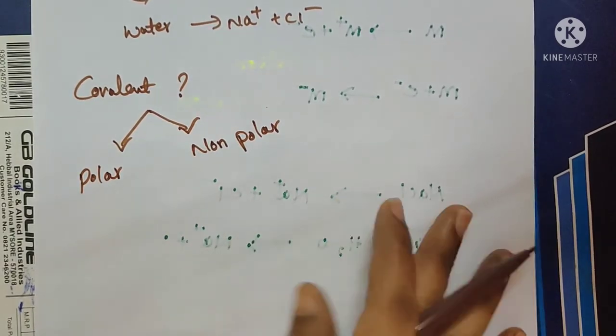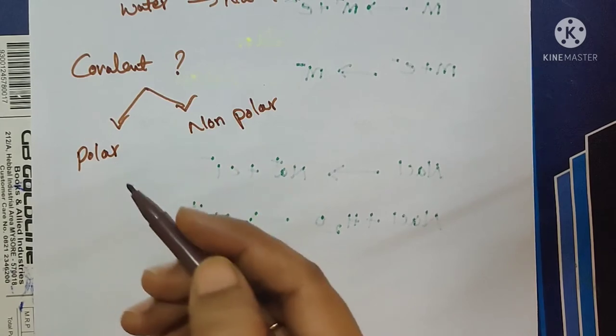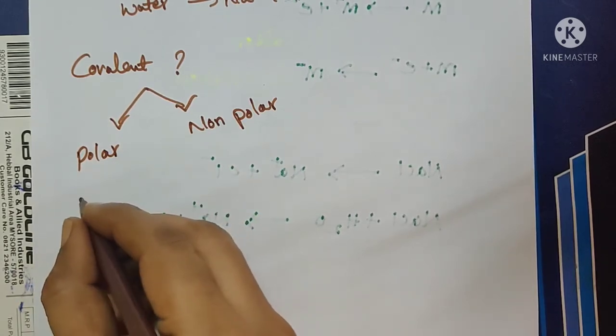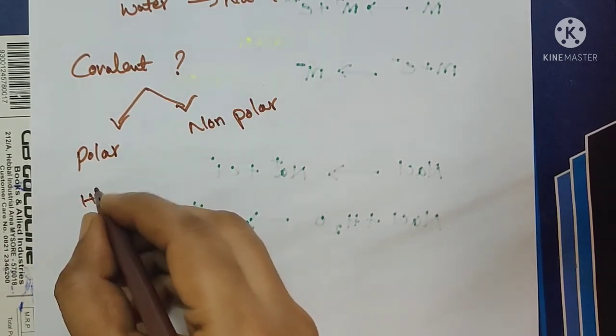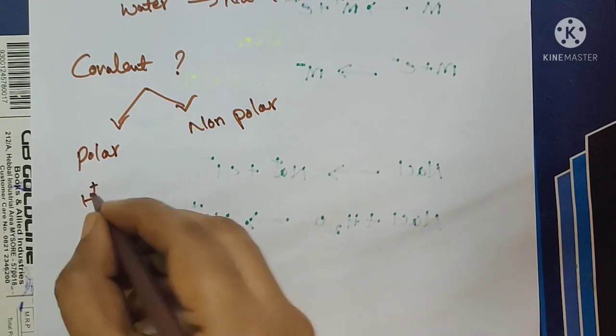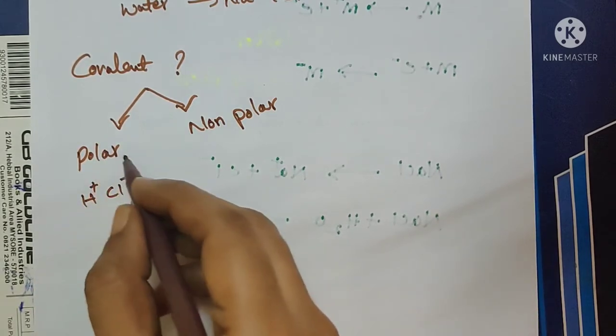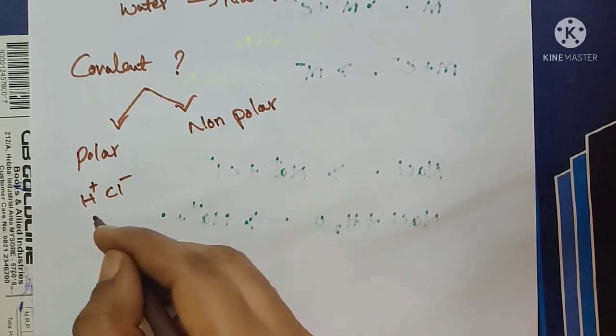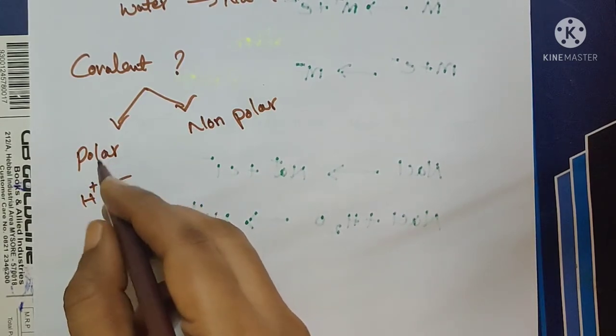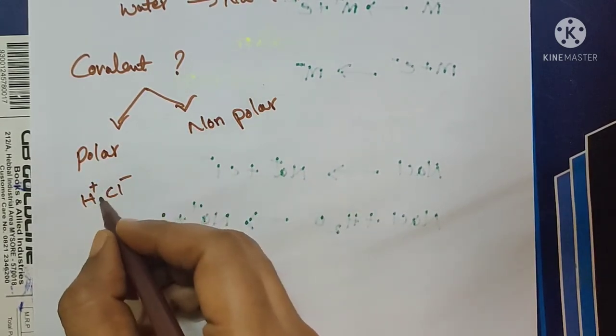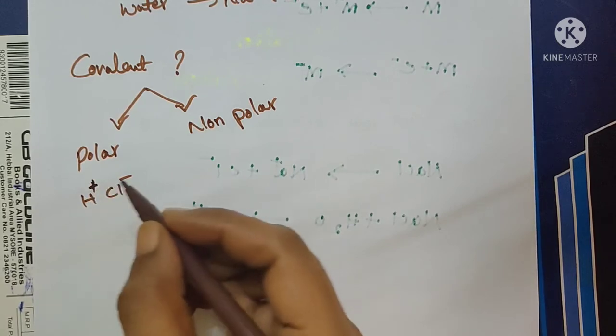What is meant by polar covalent compounds? The polar covalent compounds, they use positive and negative ions. Best example for the polar covalent bond is HCl.